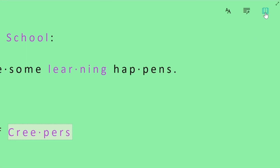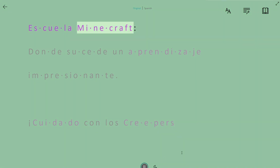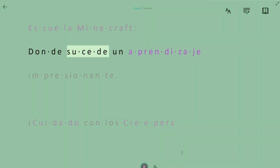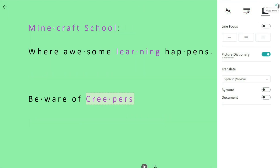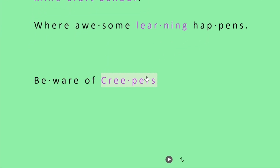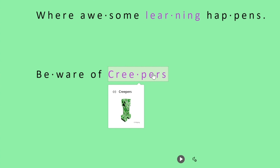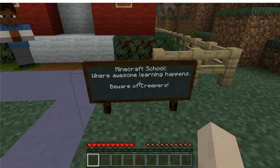Immersive Reader also lets you translate words. Toggle on the picture dictionary and you'll be able to click a word in Immersive Reader and see a picture of the item. The dictionary even includes Minecraft mobs like creepers and mooshrooms.